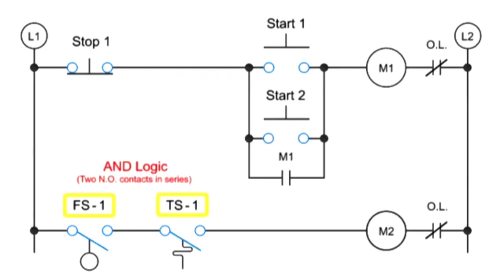Here we have two automatic switches. The motor coil M2 will only be energized if both floating switch 1 and temperature switch 1 are closed.